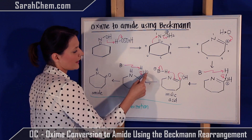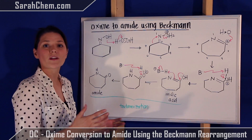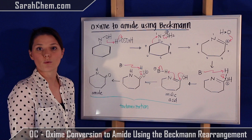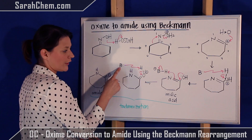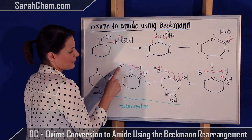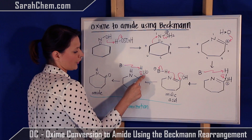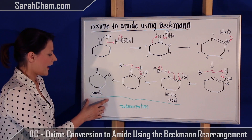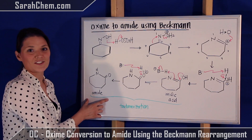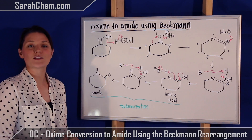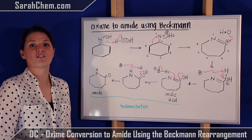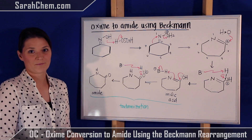The last thing to do is get rid of any remaining formal charges. Our generic base in solution comes and removes the hydrogen on the oxygen, and we have our amide as the final product. And that's what the mechanism looks like using the Beckmann rearrangement to convert from an oxime to an amide.